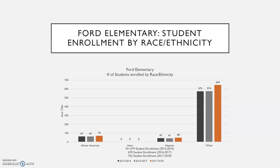Student enrollment by race and ethnicity is trending upward slightly. African American students went from 63 to 70, Hispanic students from 41 to 48, and predominantly white students at Ford went from 574 to 644 students. Student enrollment at Ford is increasing year after year.